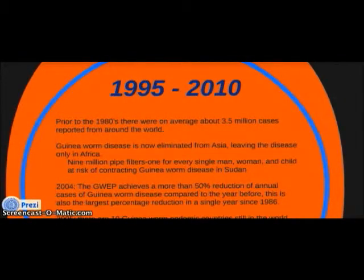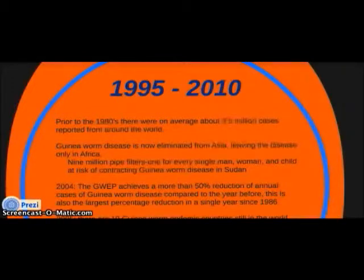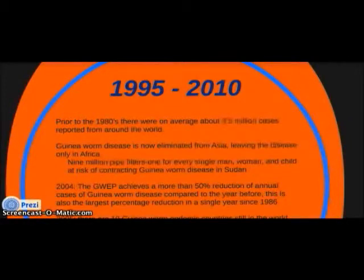From 1995 to 2010, prior to the 1980s there were on average about 3.5 million cases of guinea worm disease reported worldwide. Since 1980, the disease has been eliminated from Asia, leaving it only in Africa. Nine million water filters — one for every man, woman, and child at risk in Sudan — were distributed.